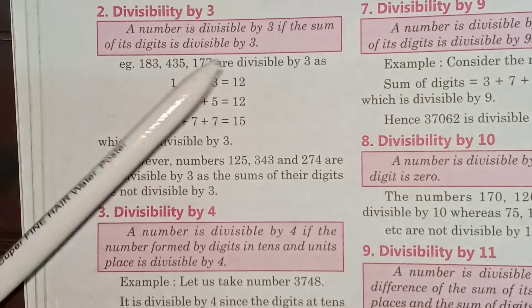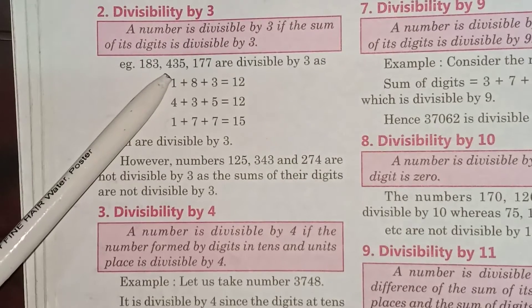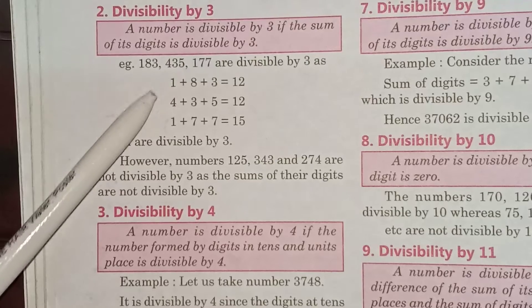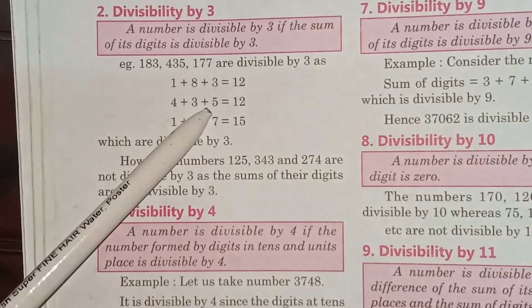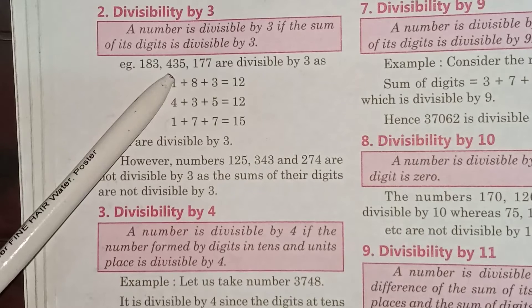So this number is also divisible by 3. For another example, 435: if we add the digits 4 + 3 + 5, we get 12, which is also divisible by 3, so this number is also divisible by 3.